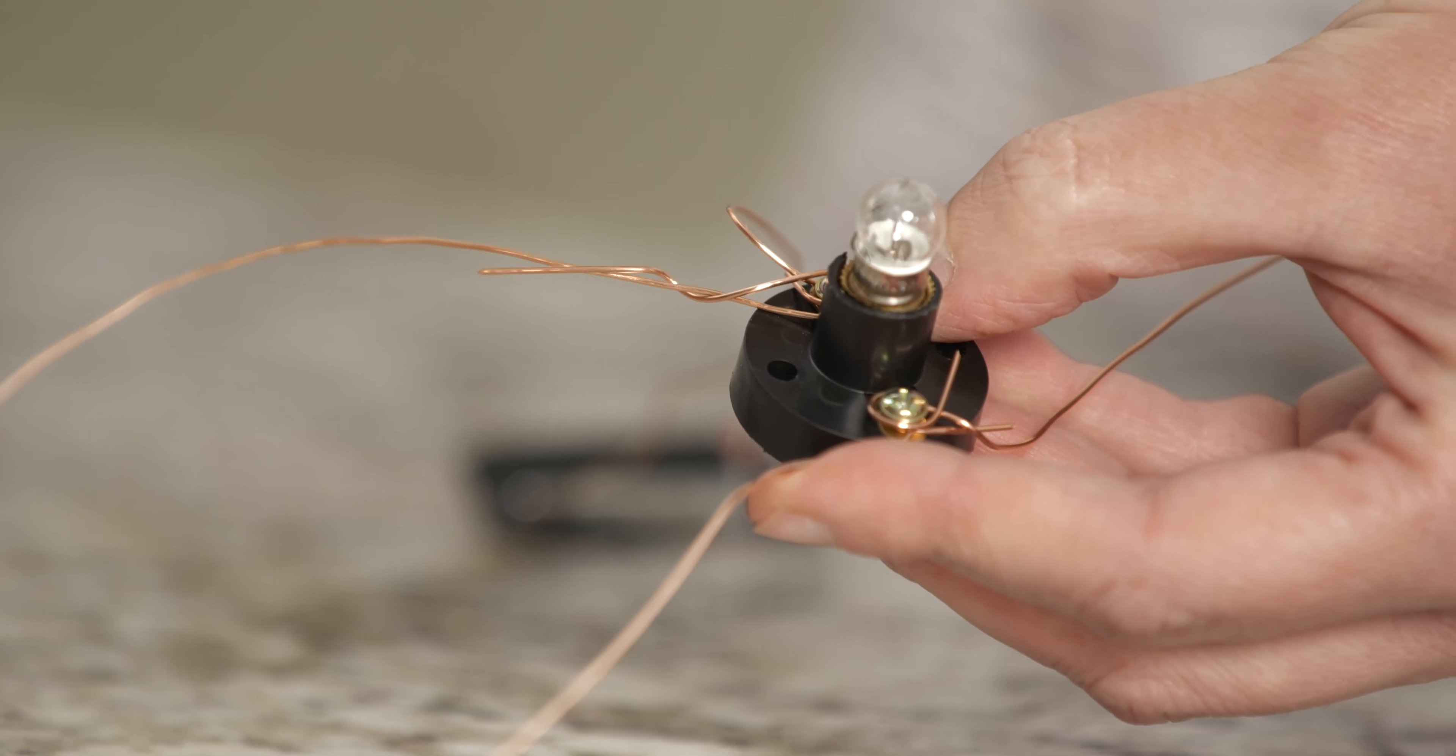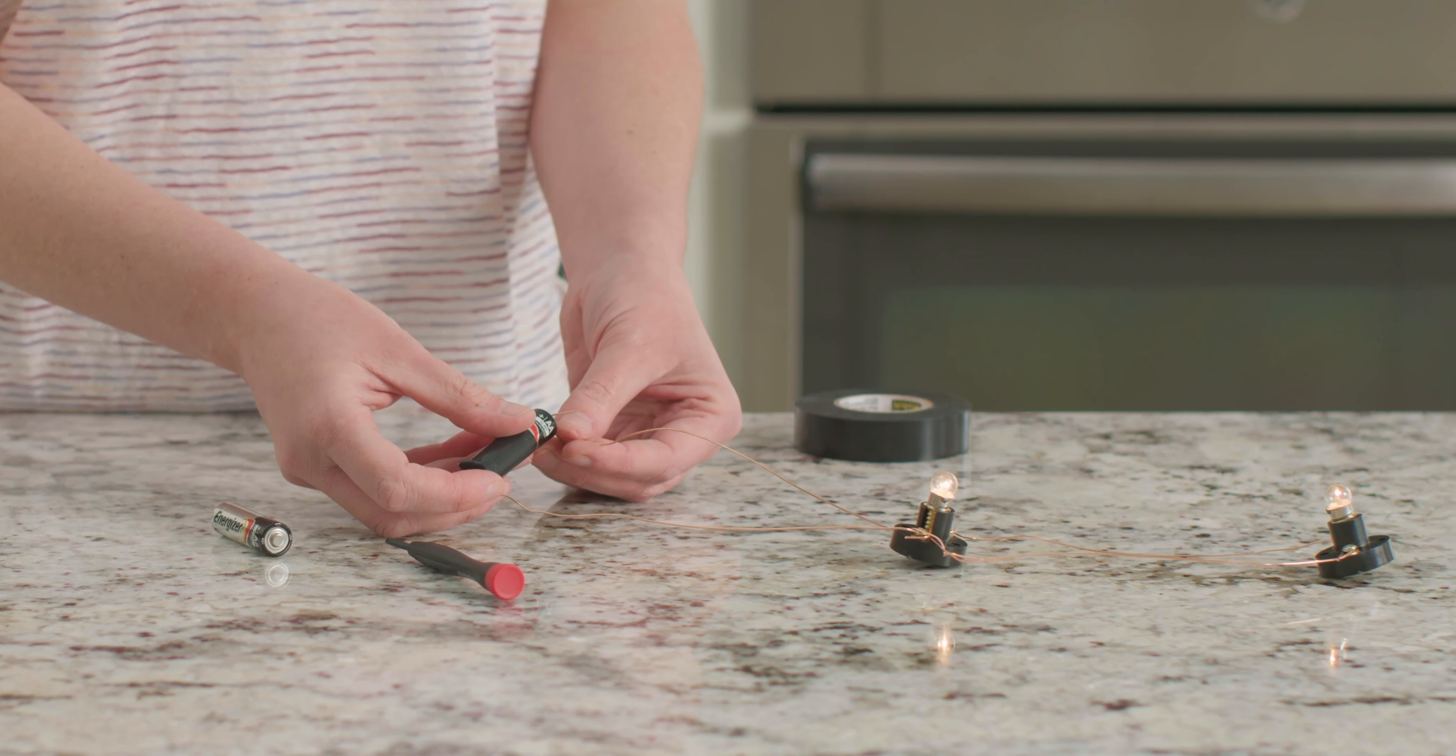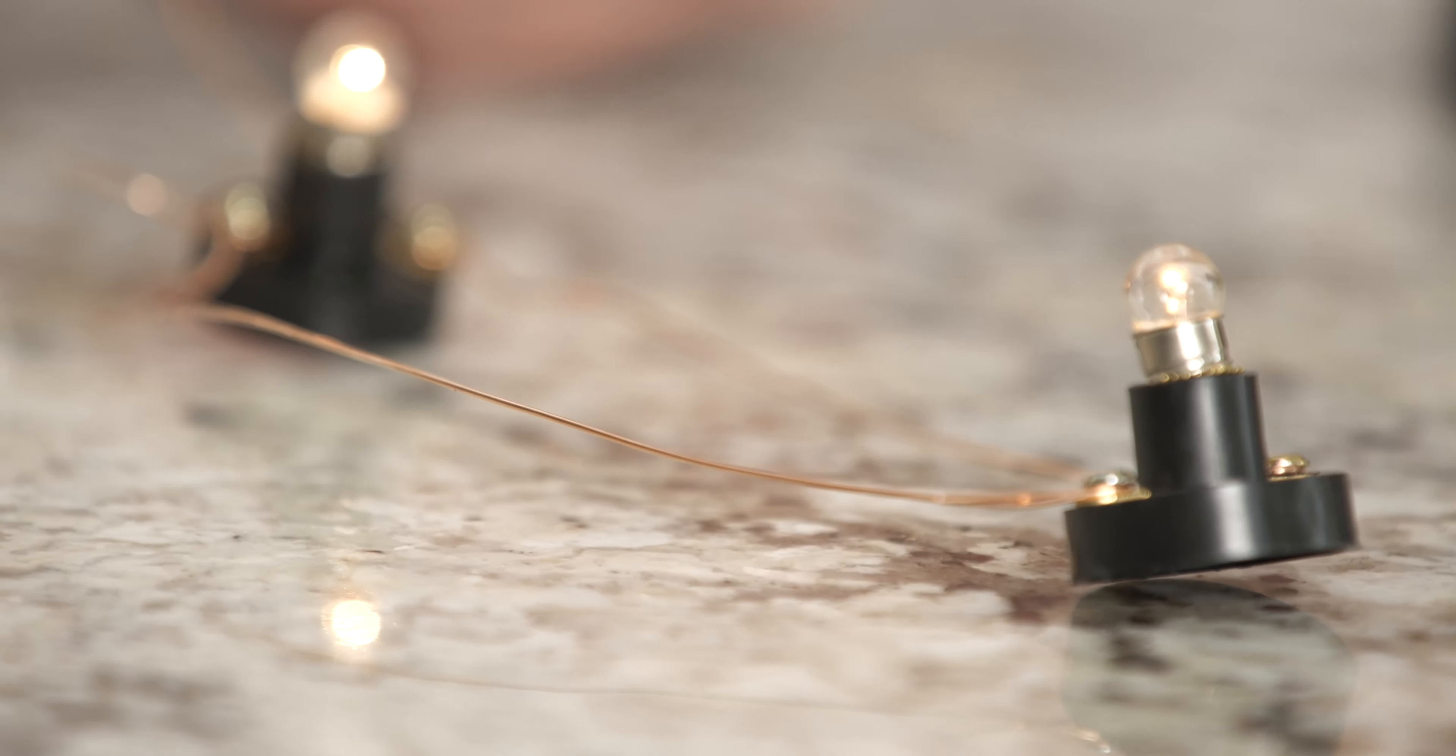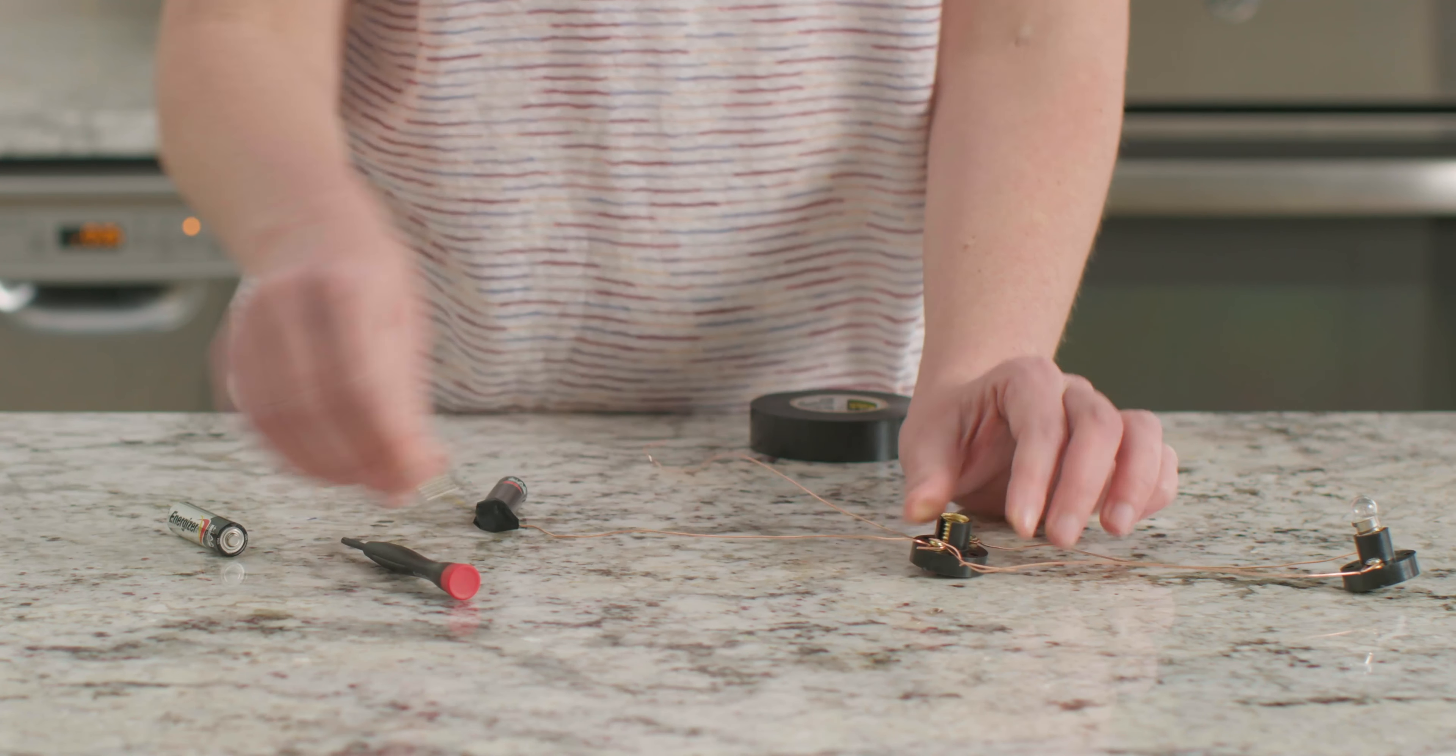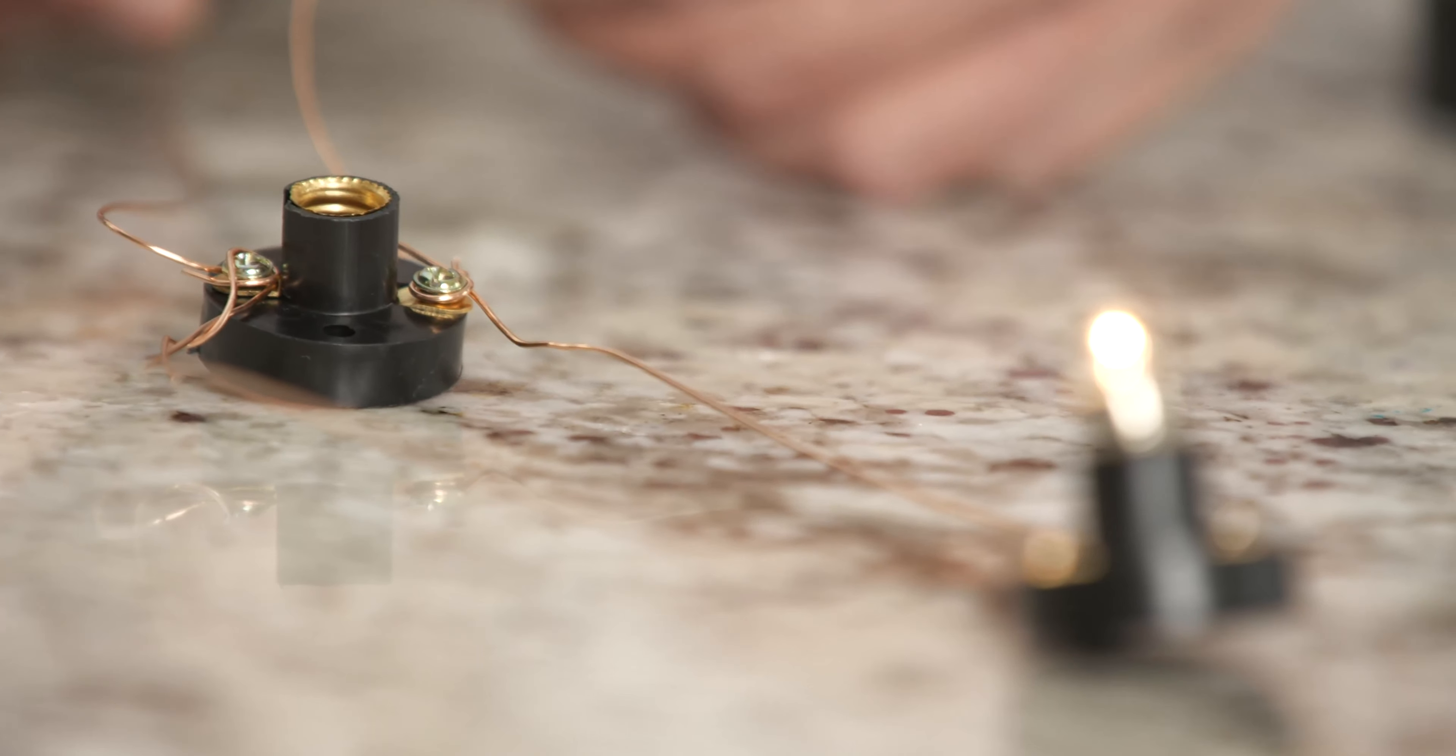All right, we're ready to touch our loose wire to the positive end of our battery. What happens? Both of our light bulbs turned on. Let's find out what happens in a parallel circuit when we unscrew one of the light bulbs. See how the other bulb stays on this time?